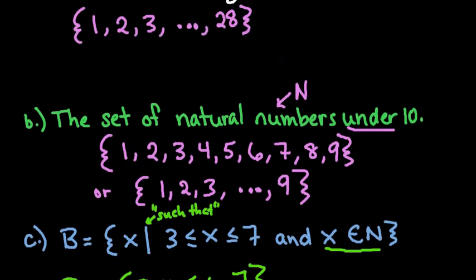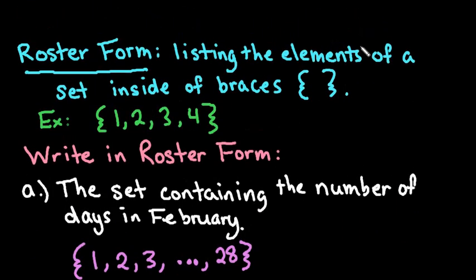To recap, in order to be in roster form, you have your brackets and list elements in order separated by commas. Each element should be included. If you have values in between, you can use an ellipsis so you don't have to write everything down.